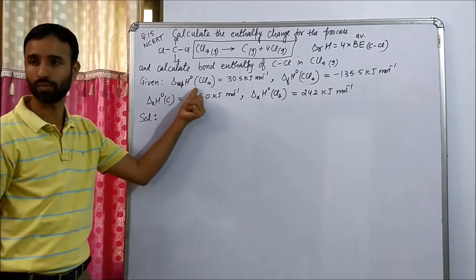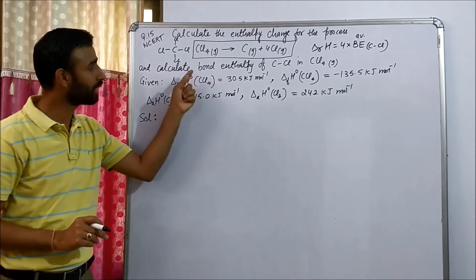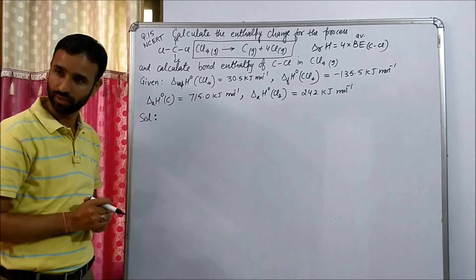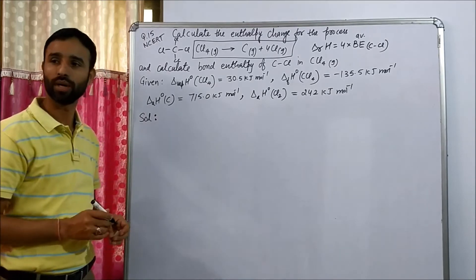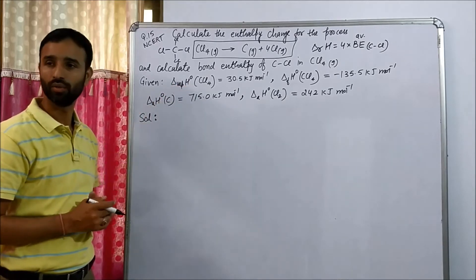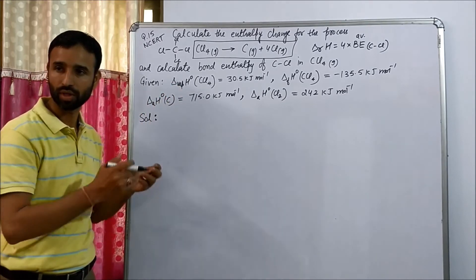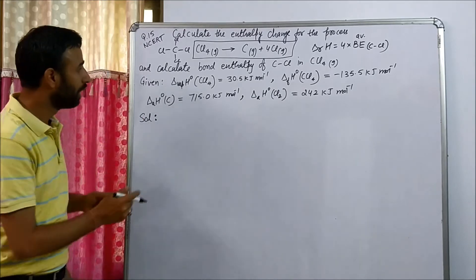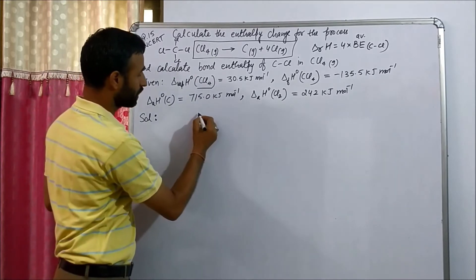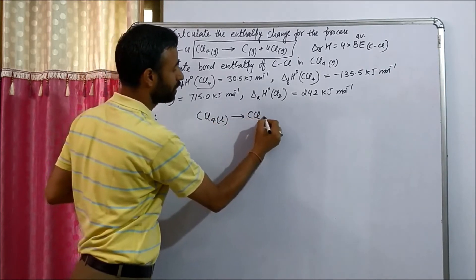So first is enthalpy of vaporization. And this naught sign indicates standard. What do you mean by standard? The measurement is at 298 Kelvin and one bar pressure. So first is standard enthalpy of vaporization. VAP means vaporization. So vaporization means to convert liquid into gas and for what? CCl4. So that implies first equation is CCl4 liquid to CCl4 gas.